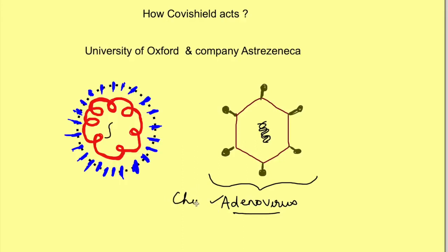This adenovirus is derived from chimpanzees, and even though it can enter cells, it cannot multiply in the cells. What AstraZeneca did is that this genome of the coronavirus has a part which produces spike proteins. This part of the genome of coronavirus is integrated with the genome of the adenovirus, so if this adenovirus goes into the cells of our body, these spike proteins can be produced in the body itself.